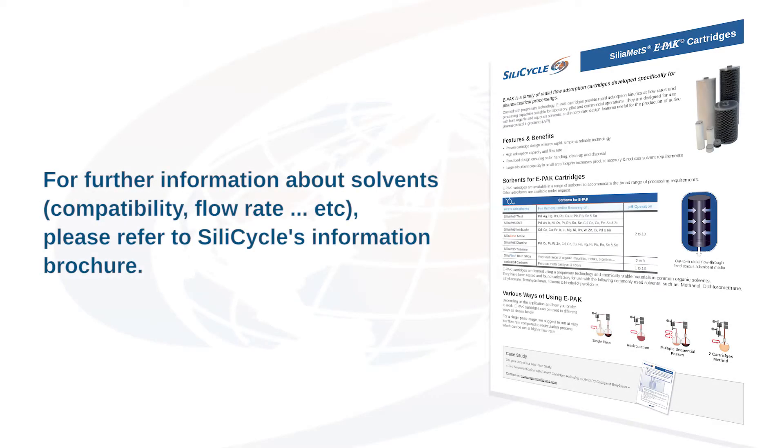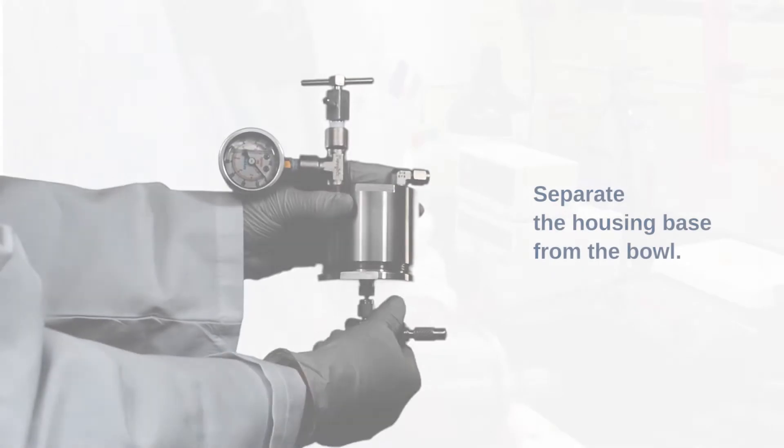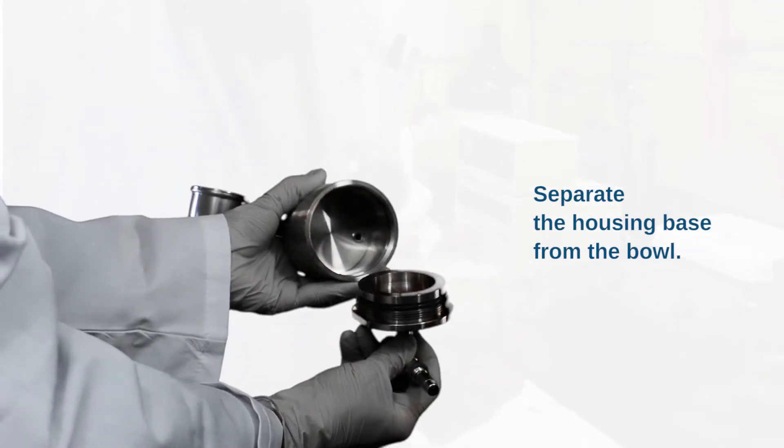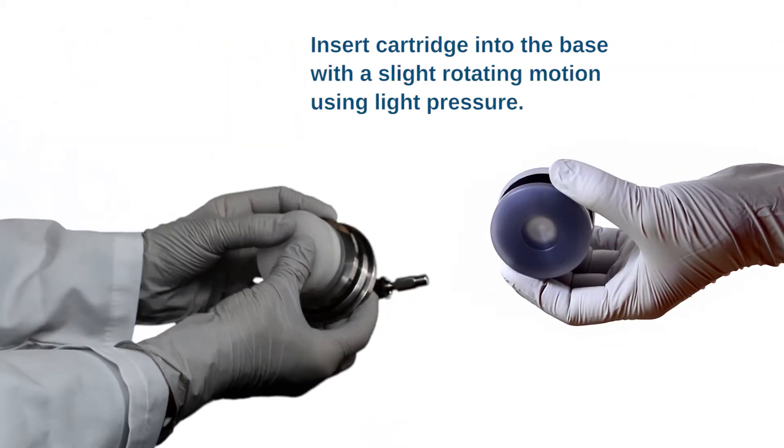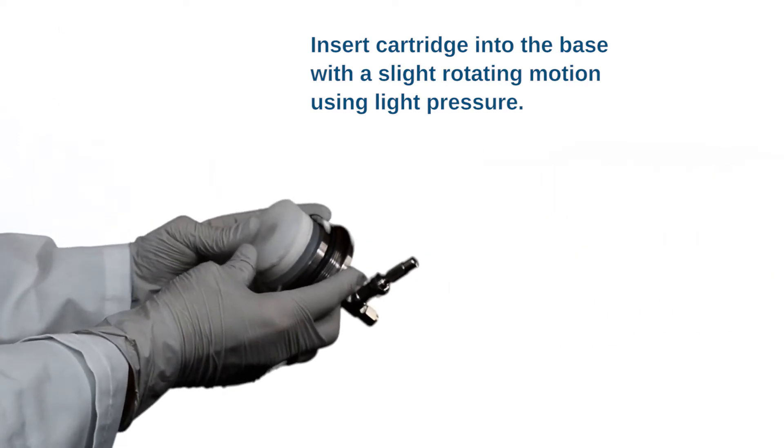For further information about solvents, please refer to SiliCycle information brochure. Separate the housing base from the bowl. Select a cartridge.